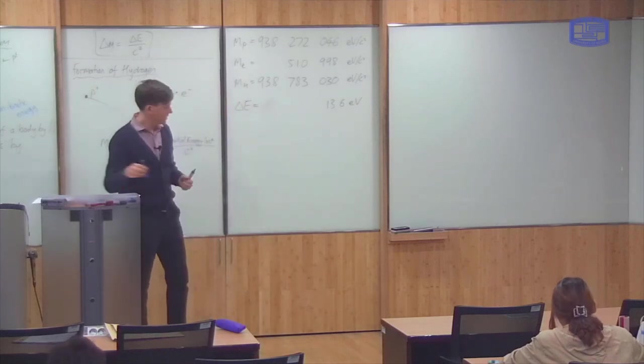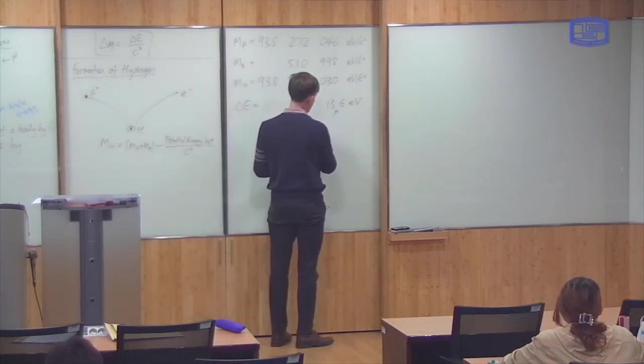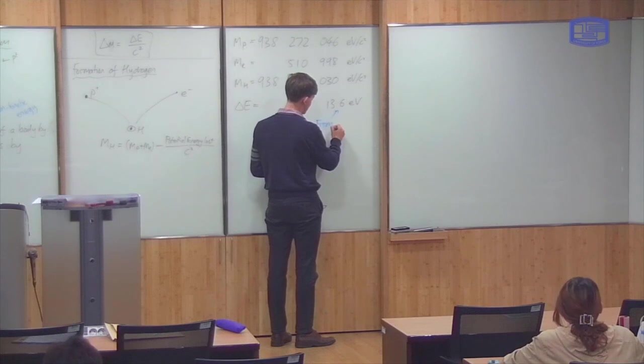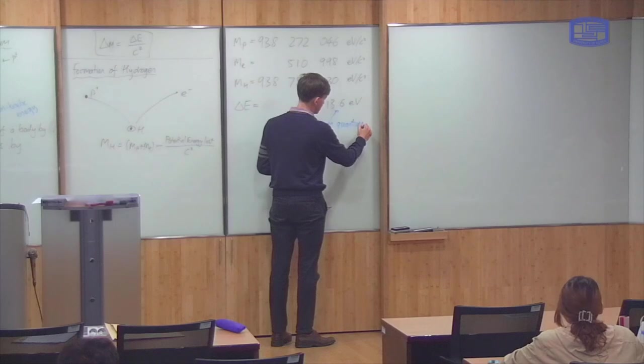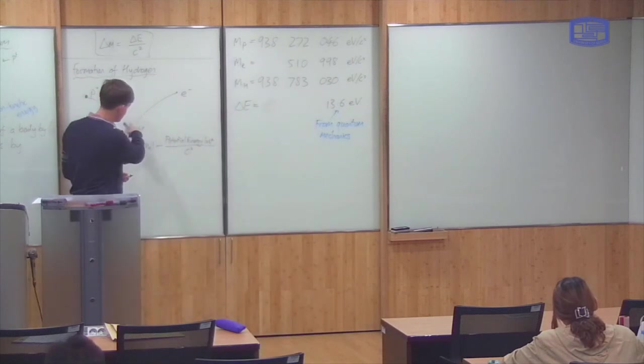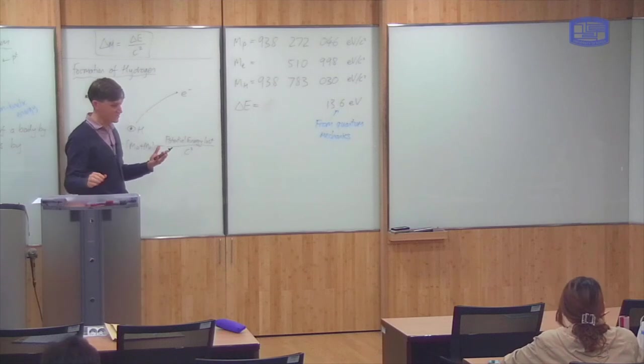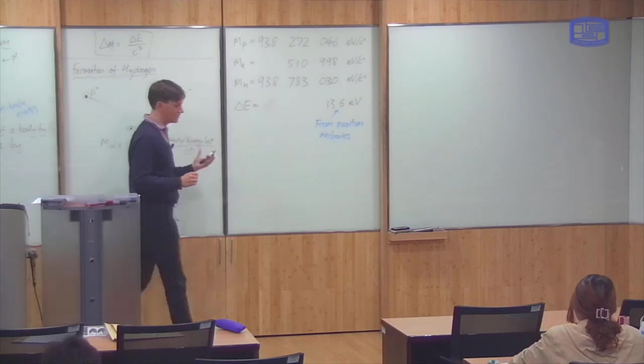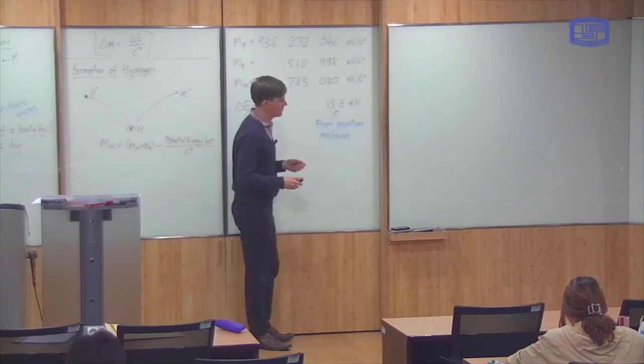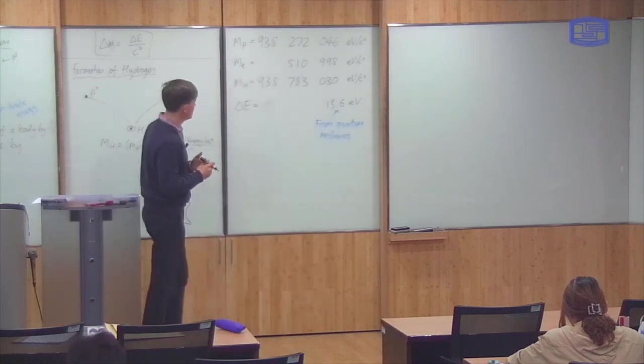This result here, I mean, you can measure it experimentally, but it's also, we'll see in the course after the midterm exam, you can get this result from quantum mechanics. This question of what is the potential energy inside the hydrogen atom is something you can't answer using classical physics. So, you need quantum mechanics, and we'll see this result after the midterm exam, where this number comes from.